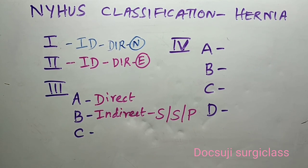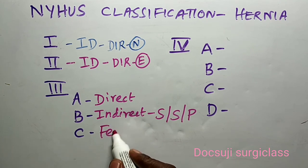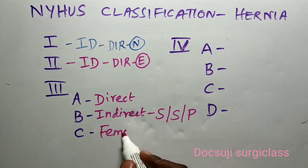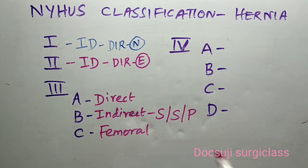Type 3C is very simple — it is a femoral hernia. That covers Type 3.